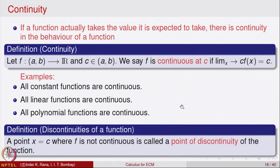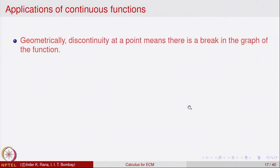Next, we would like to describe when a function is not continuous at a point. We say a point x = c where f is not continuous is called a point of discontinuity of the function. A point x = c in the domain of the function is called a point of discontinuity if f is not continuous at that point. Discontinuity essentially means that there is a break in the graph of the function.